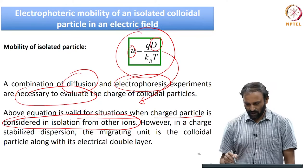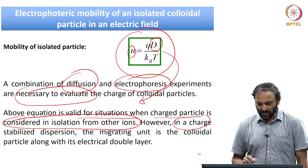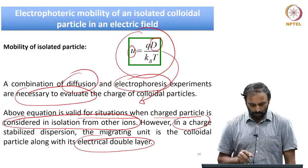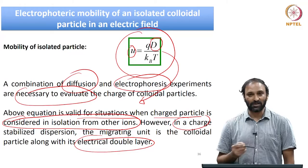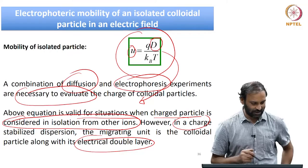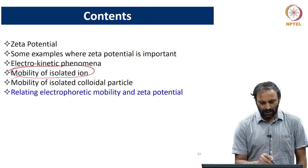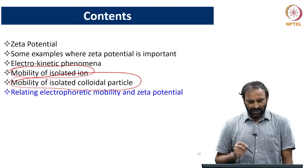Because charged particles always have an electrical double layer, the migrating unit in the electric field is not only the particle itself but includes the associated electrical double layer. Therefore, one has to exercise caution when using these expressions. Now that we know about the mobility of isolated ions and the electrophoretic mobility of charged particles, we will develop expressions for relating electrophoretic mobility to the zeta potential.